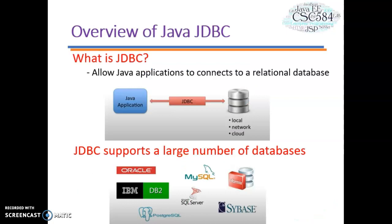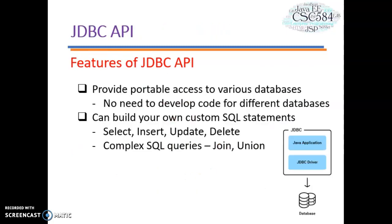So let's start with what is JDBC. Basically, JDBC allows Java applications to connect to a relational database. The major databases supported include Oracle, SQL Server, MySQL, and many others. The database can be located on any local machine with the application, on a network, or even in the cloud. The main feature of JDBC is that it is a standard API — there is no need to develop code for different databases. That's the main advantage of JDBC.